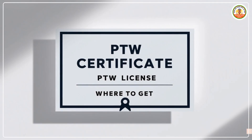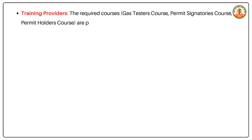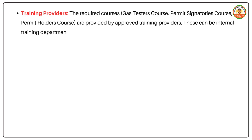Where to get PTW certificates or licenses? Training Providers — the required courses, including the gas tester's course, permit signatory's course, and permit holder's course, are provided by approved training providers. These can be internal training departments or external organizations authorized by the company.